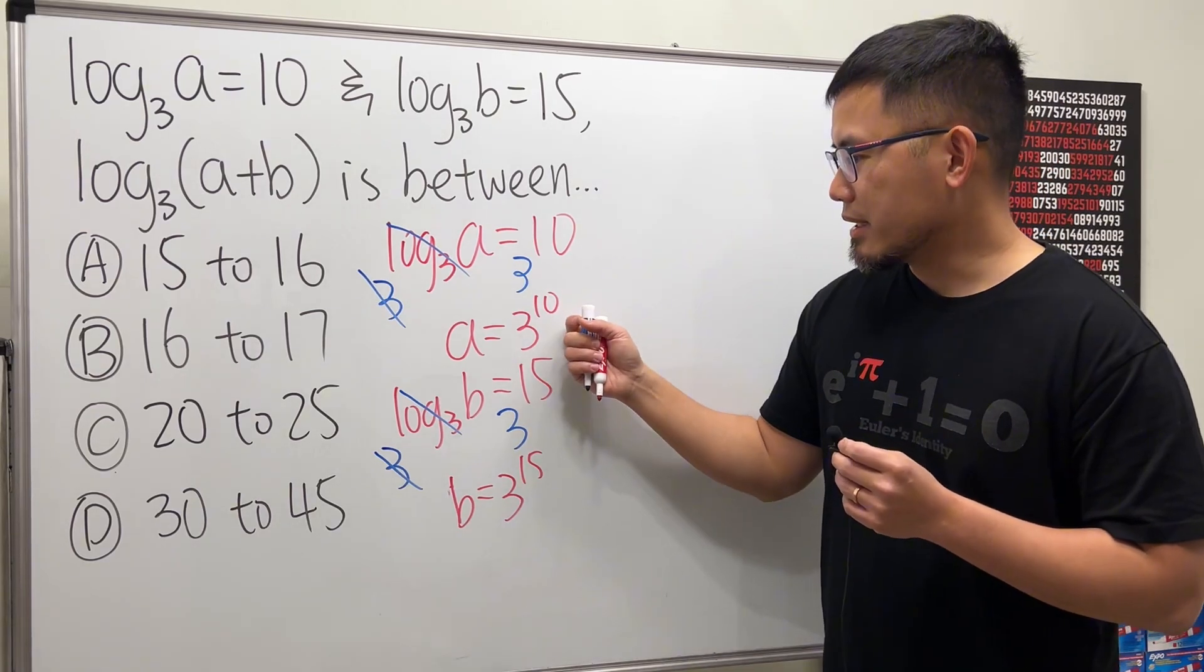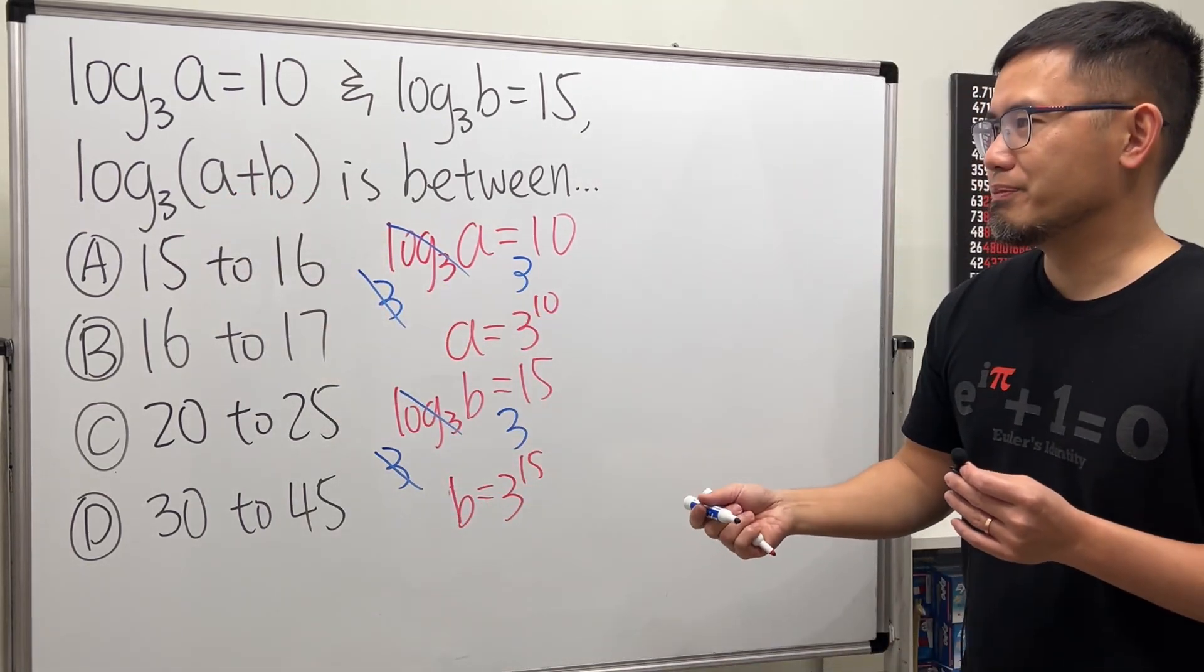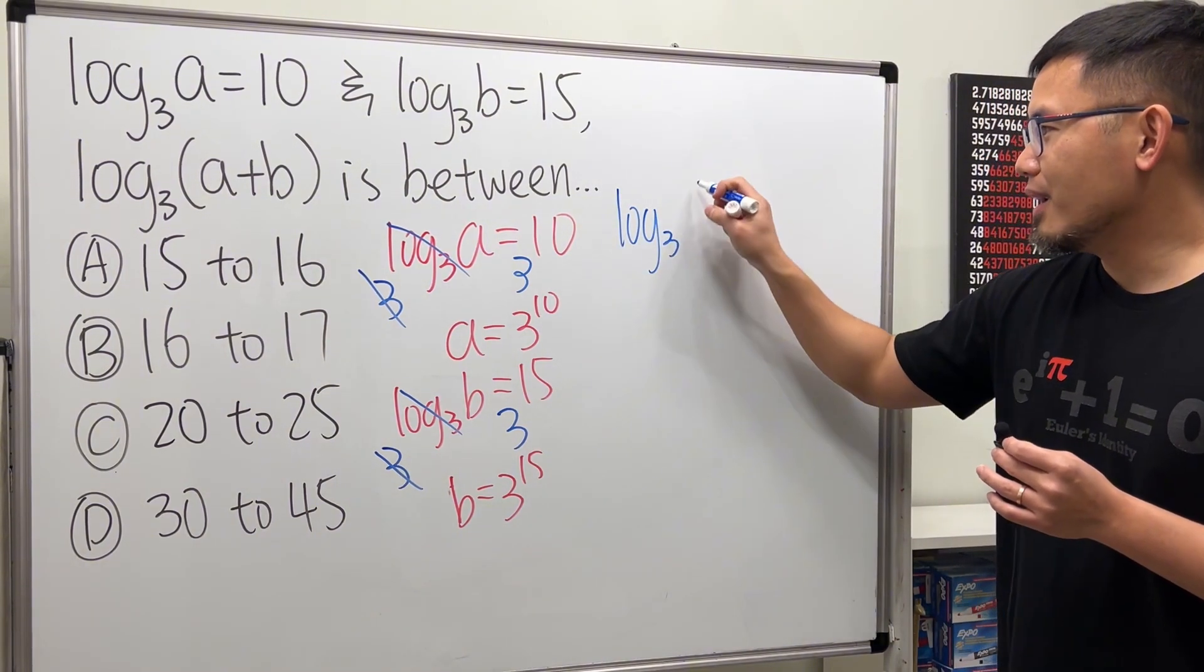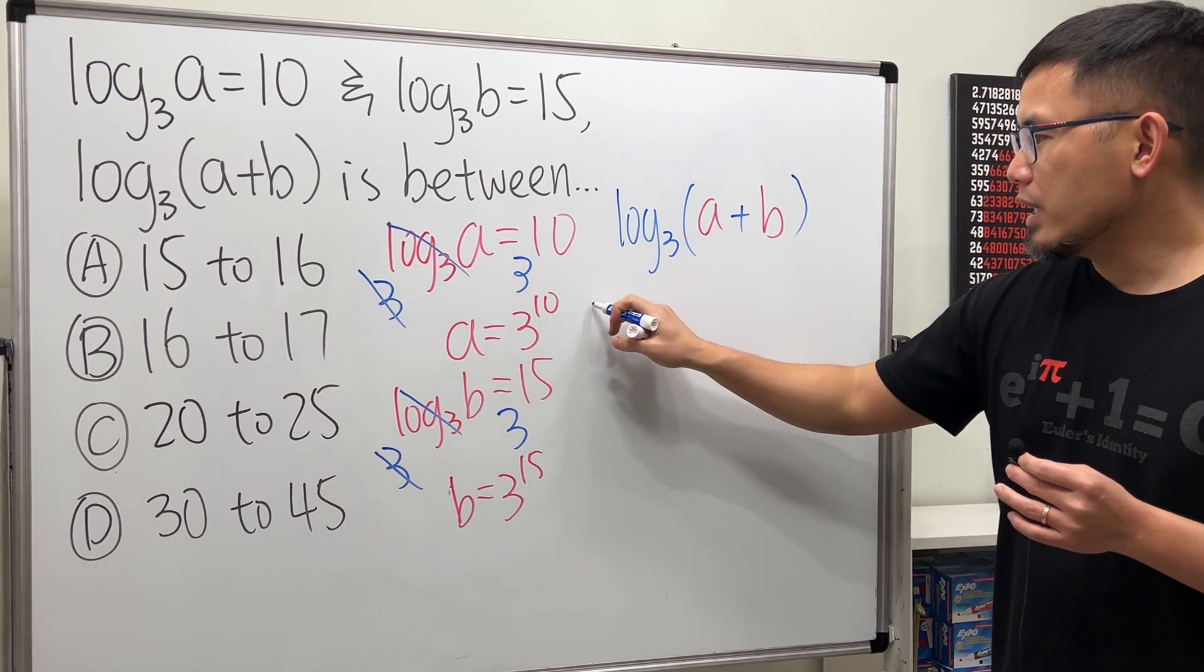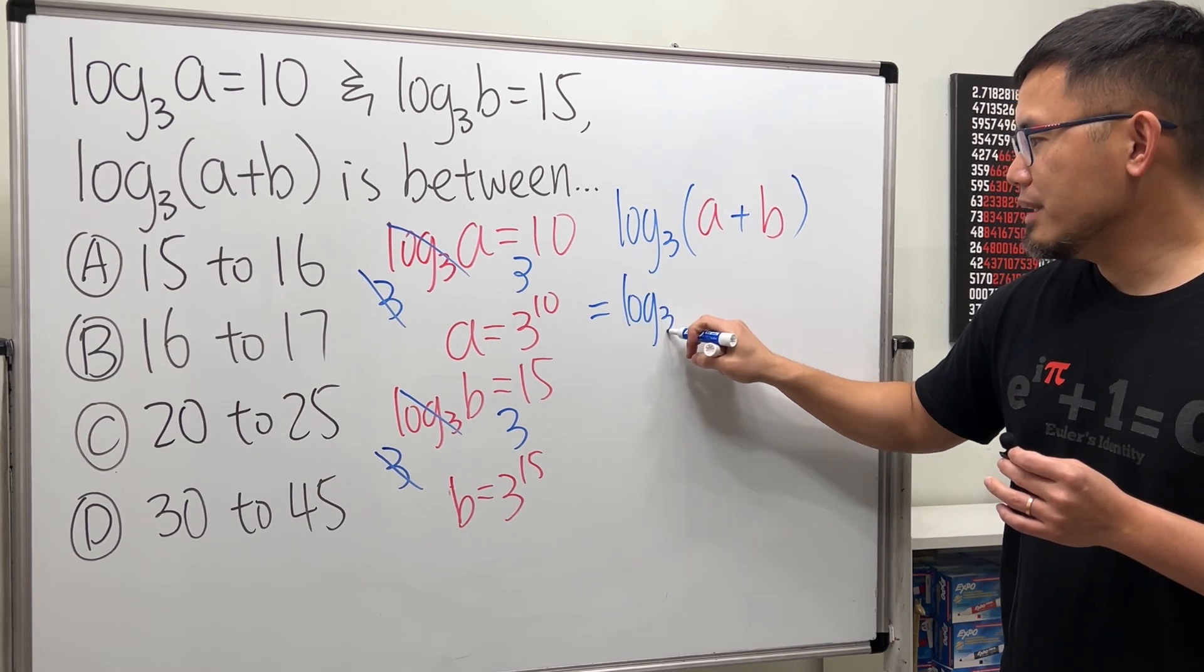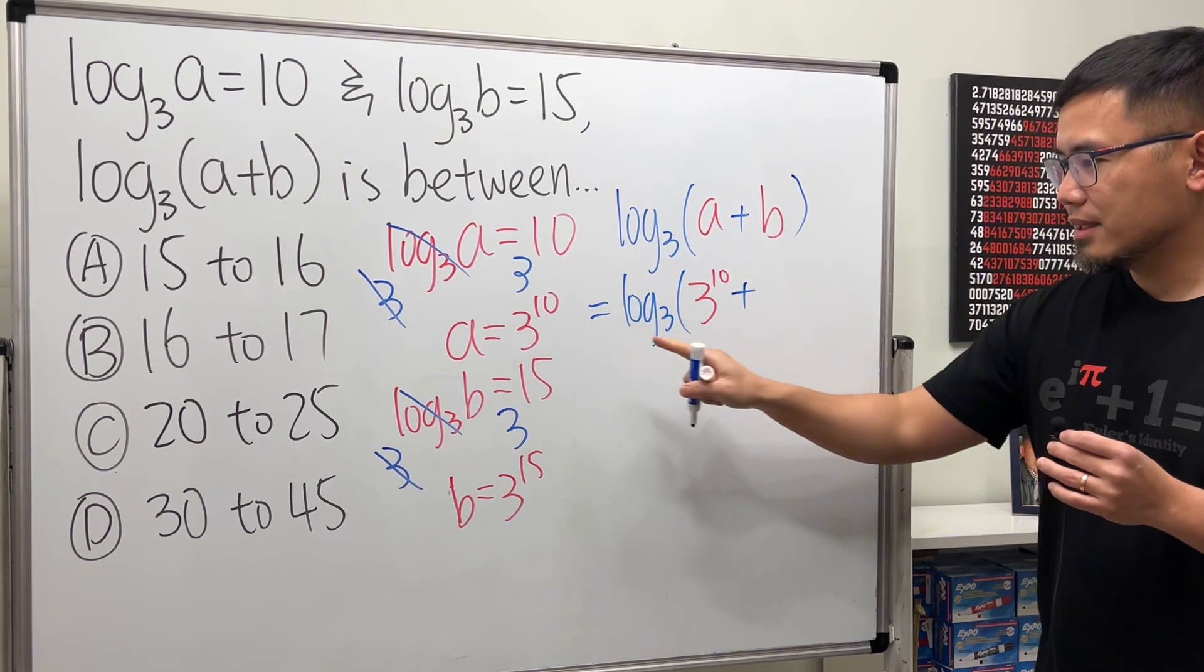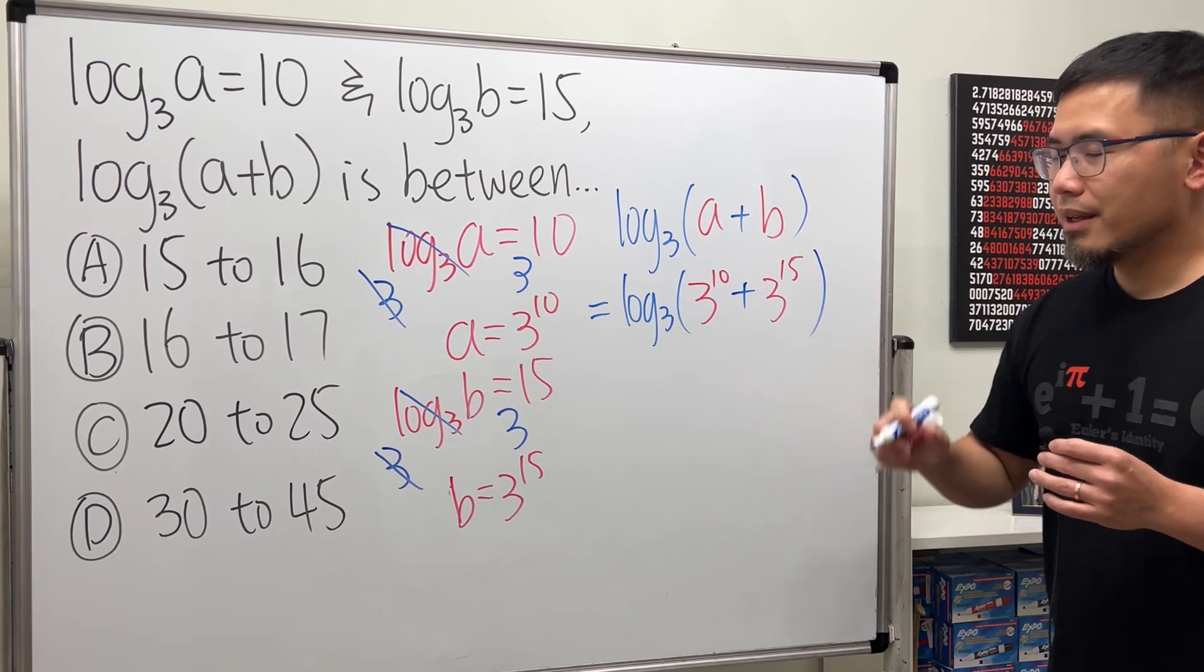And then I can just plug in a and b into this expression and try to figure out how big that is going to be. So log base 3 of (a+b), this right here will equal log base 3 of, a is that, which is 3 to the 10th. And then we add b is this, which is 3 to the 15th.